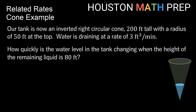We've got a picture here of what that would look like. It is 200 feet tall and its radius is 50 feet at the top of the tank. We have water draining out of the bottom of the tank at a rate of 3 cubic feet per minute. We want to know how quickly the water level in the tank is changing when the height of the remaining liquid is 80 feet. The change in water is a change in volume, and we want a change in the height of the water level.